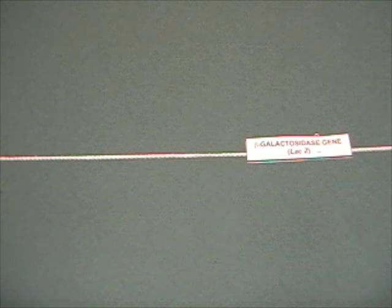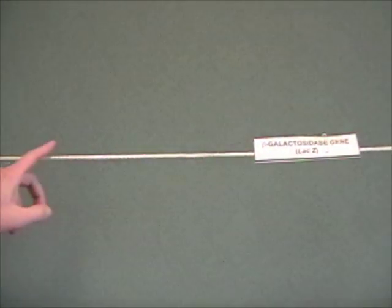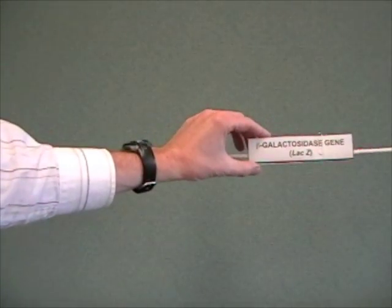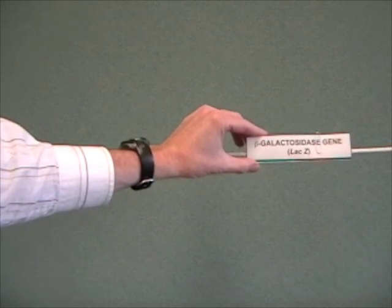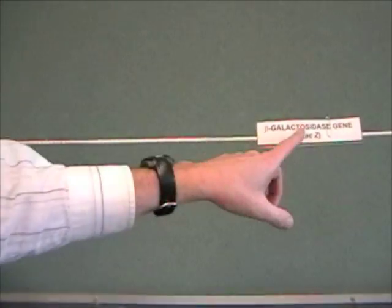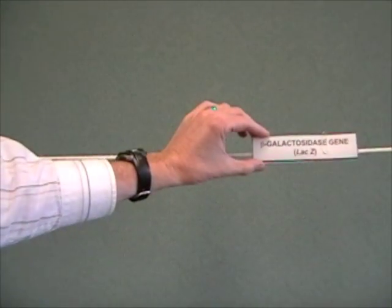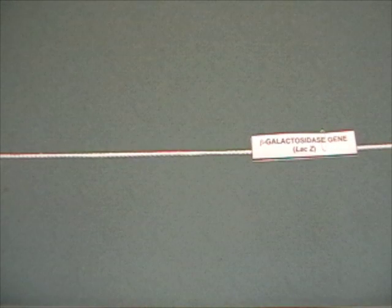When you get into lab, you're going to start off by making a model of the lac operon, or at least part of it. This rope represents a piece of DNA, and this piece of paper represents the part of the DNA containing the beta-galactosidase gene. This is the part that gets transcribed and translated to make the enzyme beta-galactosidase that you're going to be analyzing in this lab.